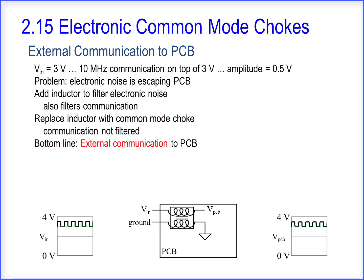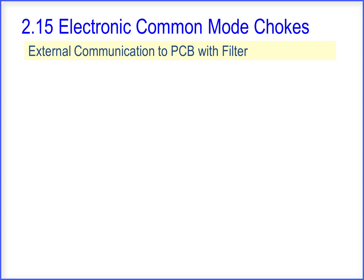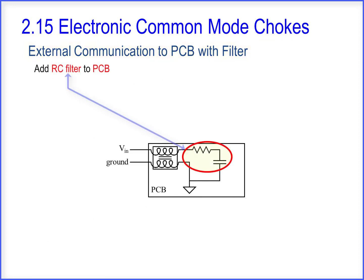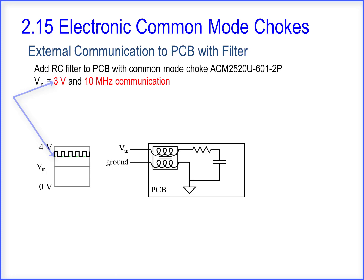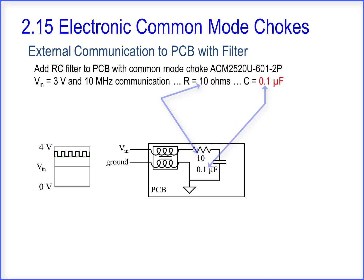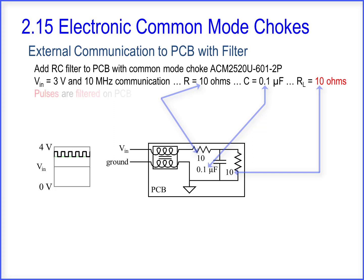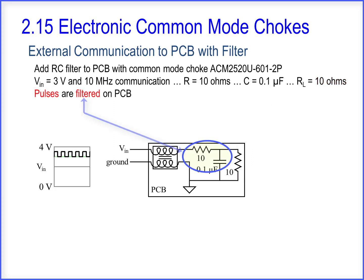Bottom line: external communication to a PCB is easier with a common mode choke. Adding an RC filter to the PCB using the common mode choke ACM 2520U, with an input voltage of 3 volts and a 10 MHz communication, the RC filter has a resistor of 10 ohms and a capacitor of 0.1 microfarads, plus a resistive load of 10 ohms. The pulses are filtered on the PCB.